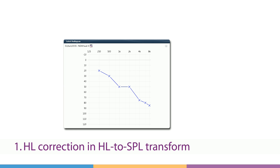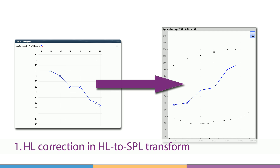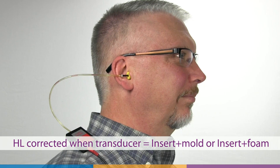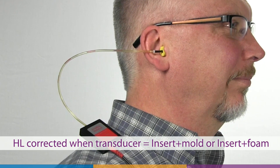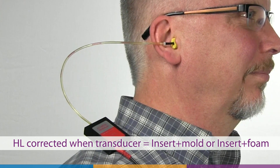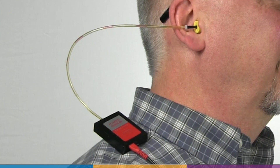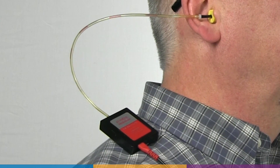One: to correct and convert HL thresholds to the SPL format used by many fitting methods and real ear approaches. Audiometers are calibrated to an average adult ear canal. Any differences in volume and impedance will be reflected in the measured hearing levels. Using a measured RECD ensures that the SPL thresholds accurately capture the true level of hearing sensitivity for the patient in question.